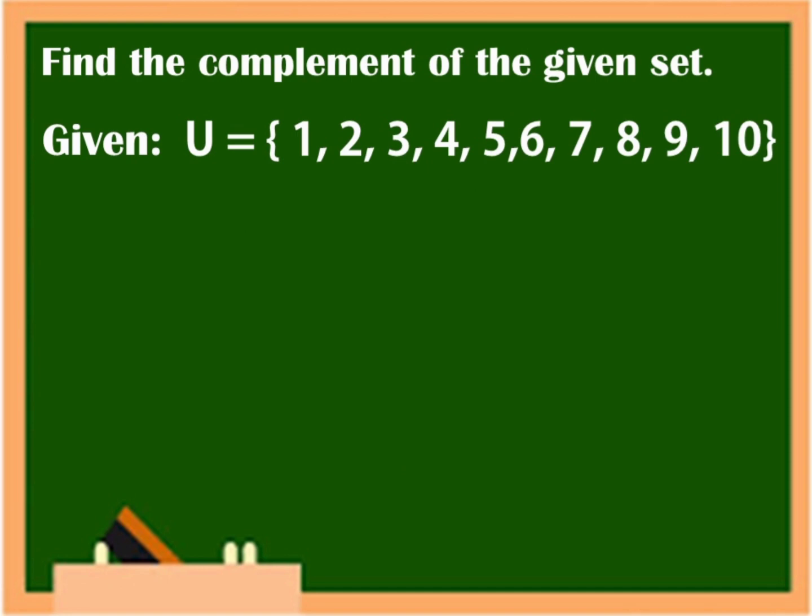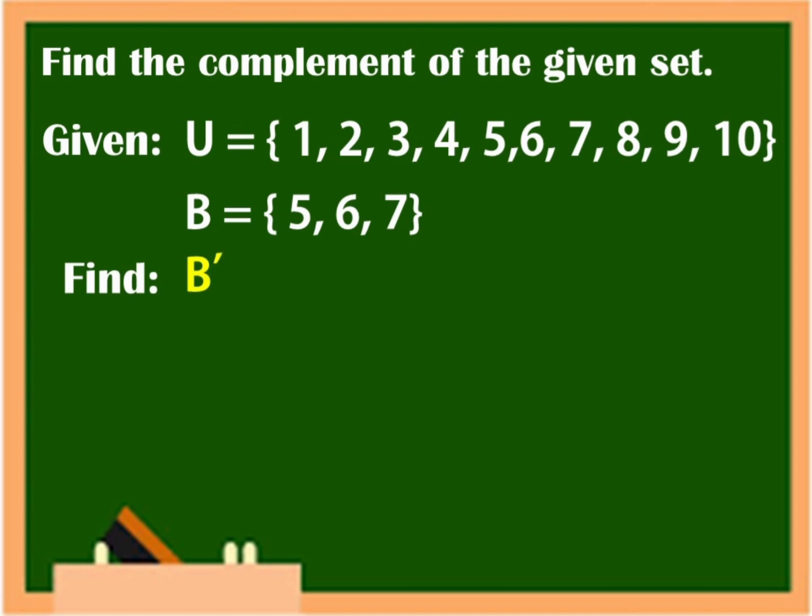If U is equal to 1, 2, 3, 4, 5, 6, 7, 8, 9, 10. And B is equal to 5, 6, 7. Now, we are going to find the B complement.